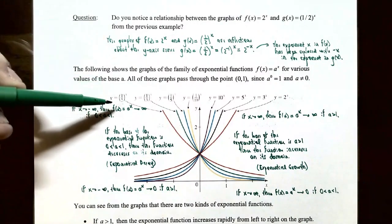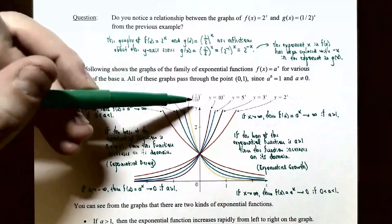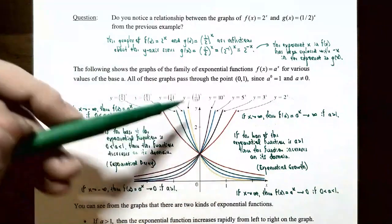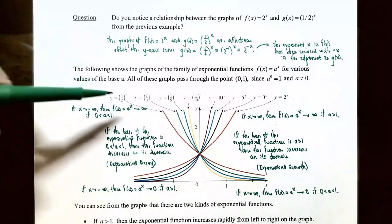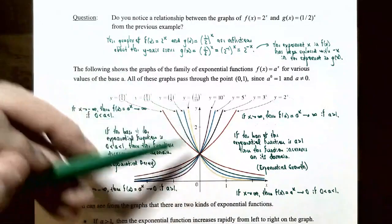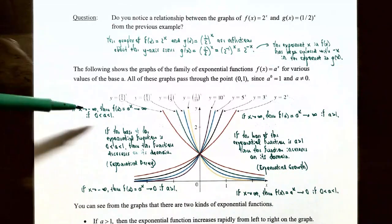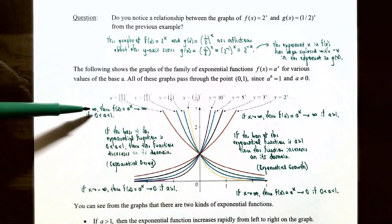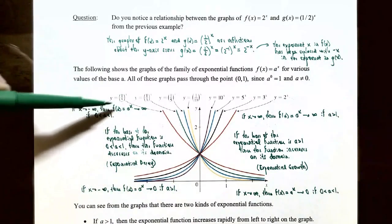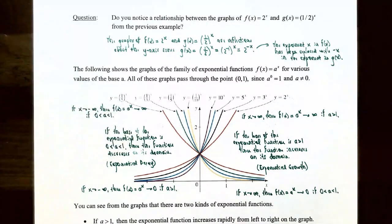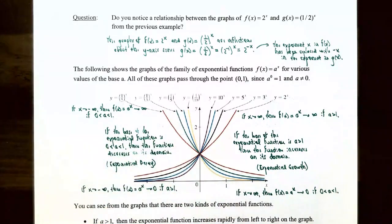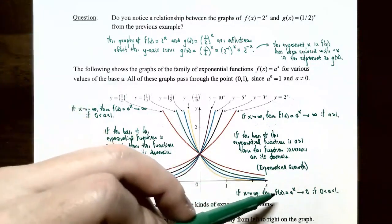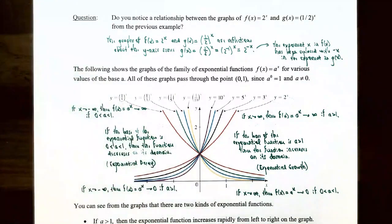For bases between 0 and 1 — such as 1/2, 1/3, 1/5, 1/10 — the graphs decrease from left to right (exponential decay), and the smaller the base, the steeper the decrease. As x approaches positive infinity, the y values approach 0, giving a horizontal asymptote at y equals 0 on the right end. As x approaches negative infinity, the y values increase without bound.